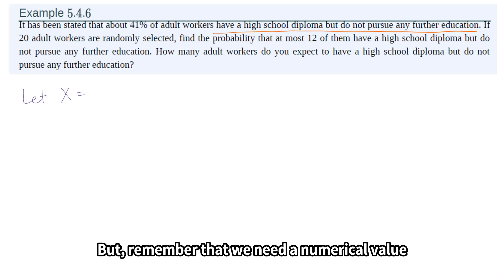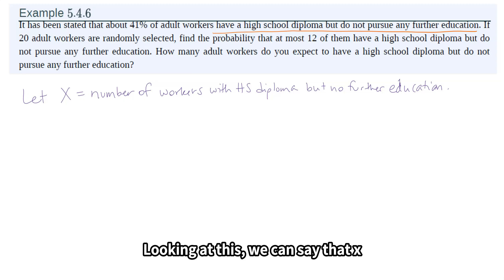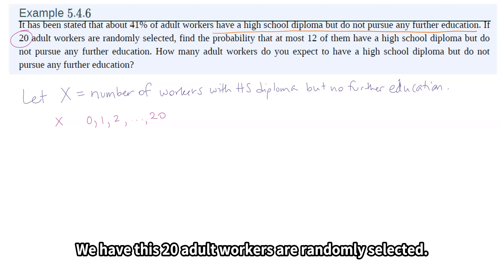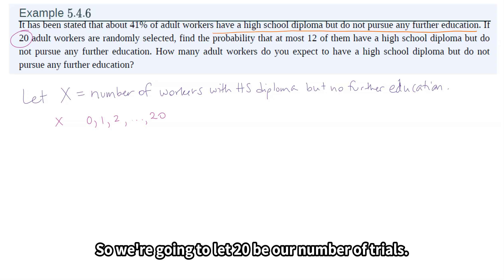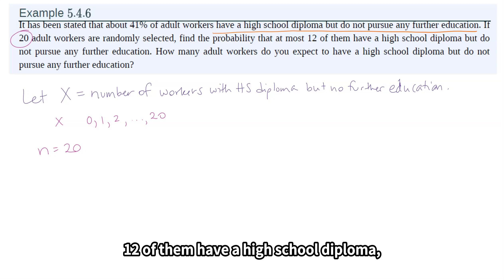Remember that we need a numerical value, so x is a random variable of the number of workers. x could be 0, 1, 2, all the way up to 20. We have 20 adult workers randomly selected, so we're going to let 20 be our number of trials — n is 20. Find the probability that at most 12 of them have a high school diploma but do not pursue further education.